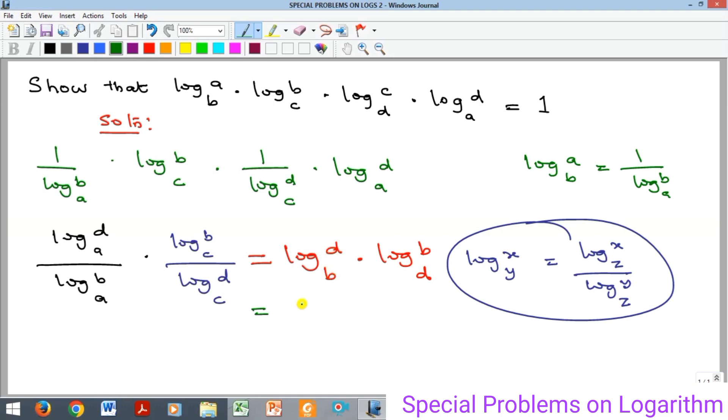times log_d(b). You can see both of them are now the same: log_d(b) and log_d(b). The implication is that the two can cancel away, and I get